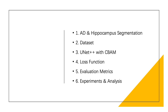This is the overview of my presentation. Firstly, I'm going to introduce the background issues of our paper, about the early diagnosis of Alzheimer's disease, the importance of hippocampus segmentation, and current problems. Then I will introduce the dataset used in this study, followed by the network structure of our proposed method, UNet++ with CBAM, and then the loss function and the evaluation metrics. At the end are the experimental results and related analysis.